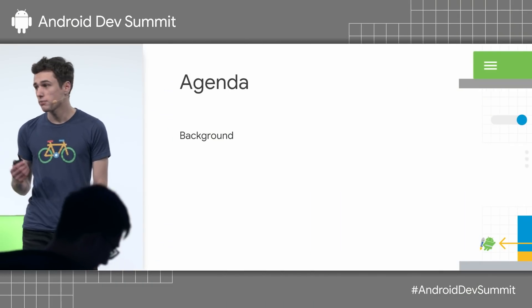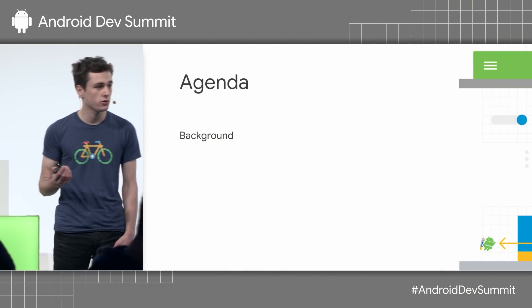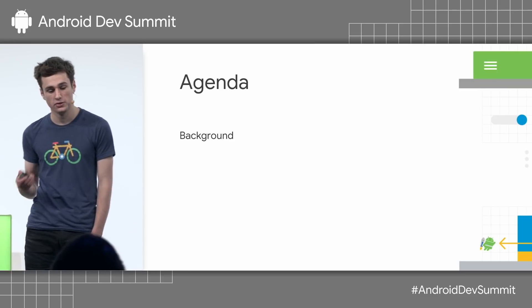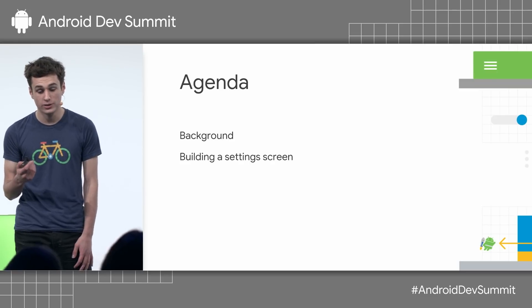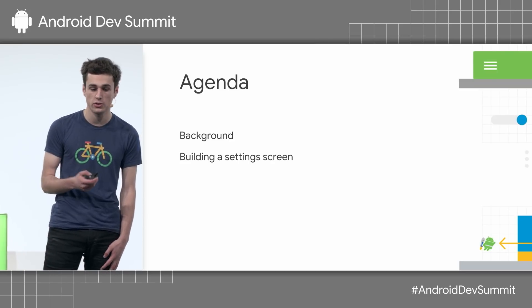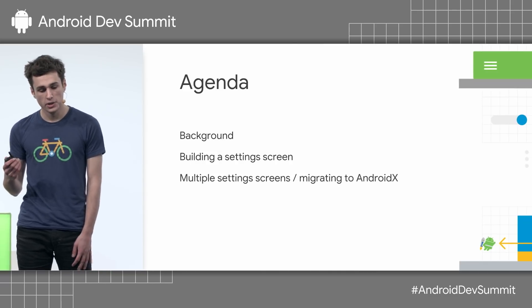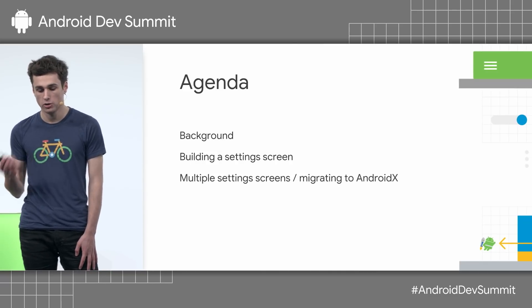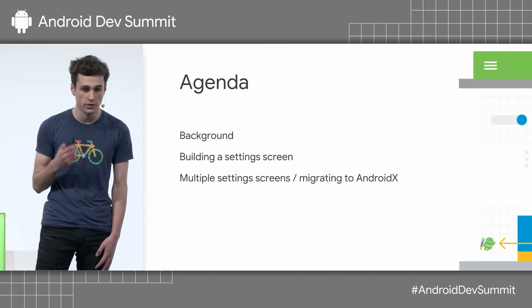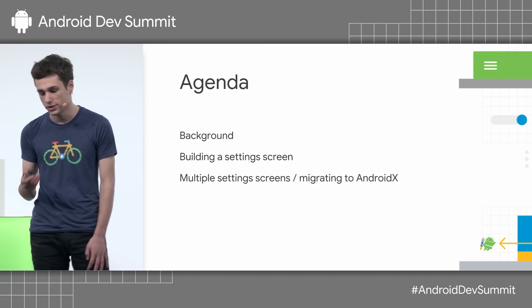I'm going to be covering some background behind preferences and try to clear up any confusion between preferences and shared preferences. I'll demonstrate how to build a settings screen and some useful features you can use along the way. And I'm going to cover how you can use multiple settings screens, which is especially useful if you're migrating your existing architecture to the AndroidX library.